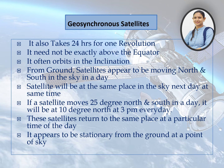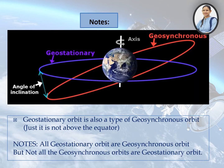So it appears to be stationary from the ground at a point in the sky. In this figure, we can see that when the inclination angle becomes zero, the orbit is known as a geostationary orbit. So we can say geostationary orbit is also a type of geosynchronous orbit, or we can say geostationary orbit is a special case of geosynchronous orbit.